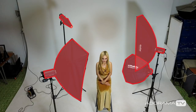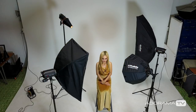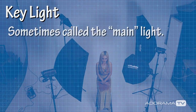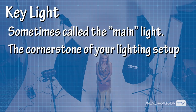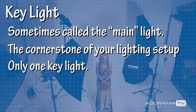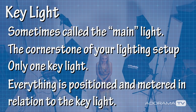These four lights represent the four basic categories of lights used in almost every studio lighting setup. Let's take a look at each of these beginning with the key light. Some people call it the main light. The key light is the cornerstone of every lighting setup. In most situations there is only one key light, and metering begins with the key — all other lights are positioned and metered in relation to it. In our setup the key is doing most of the work, giving us nice soft light illuminating most of Nikki's face.